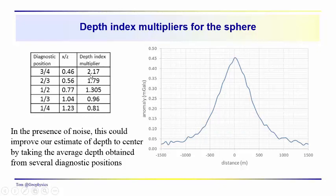We know if we take the values of x three quarters, two thirds, one half, one third, and so on, multiply them by the depth index multiplier, we get the depth.